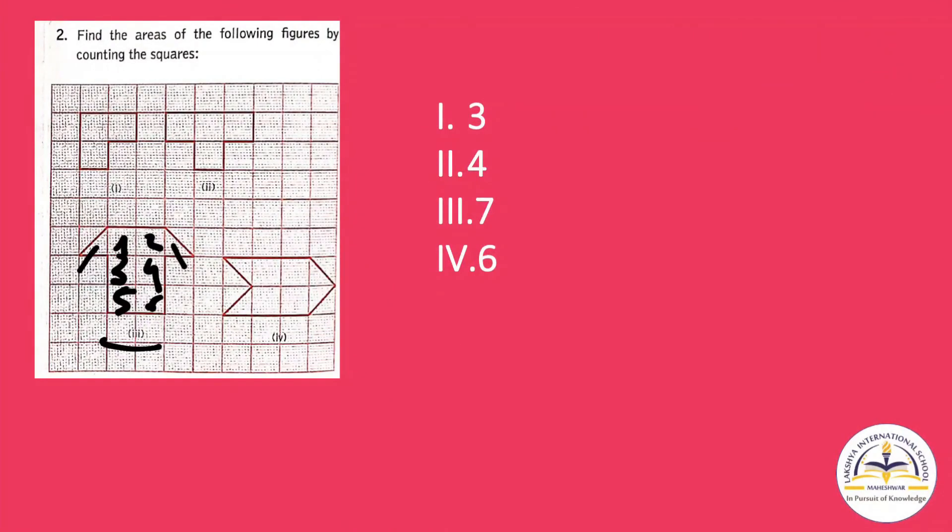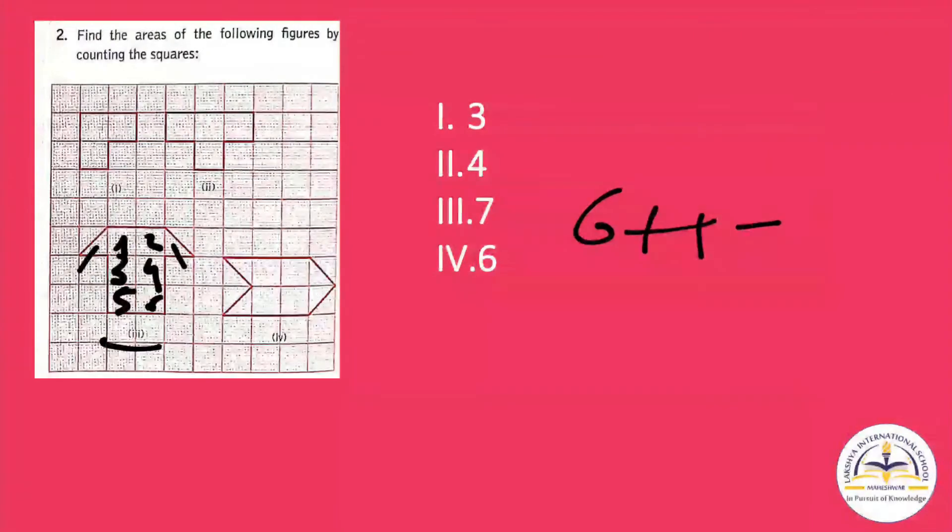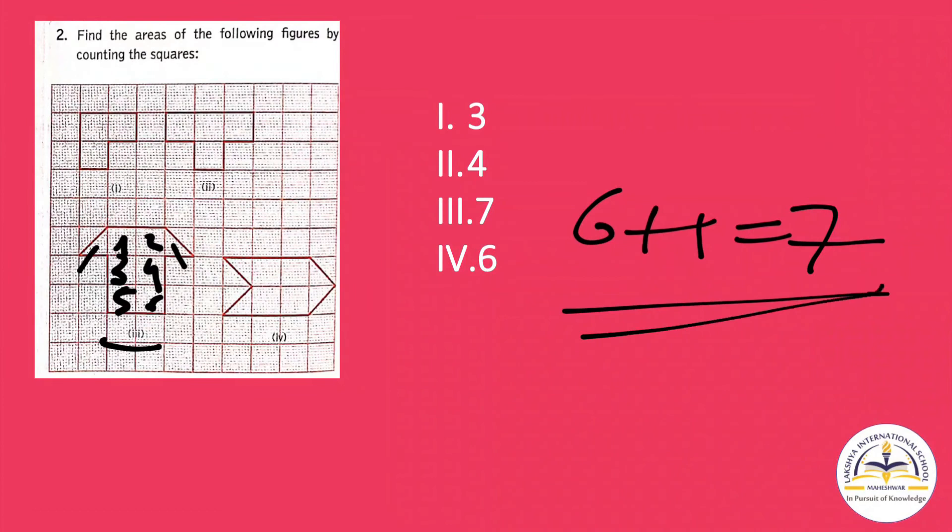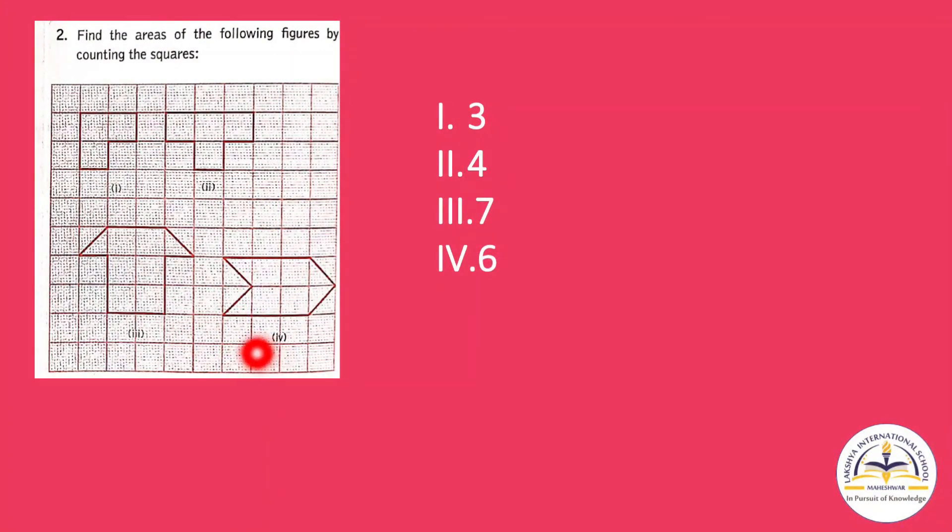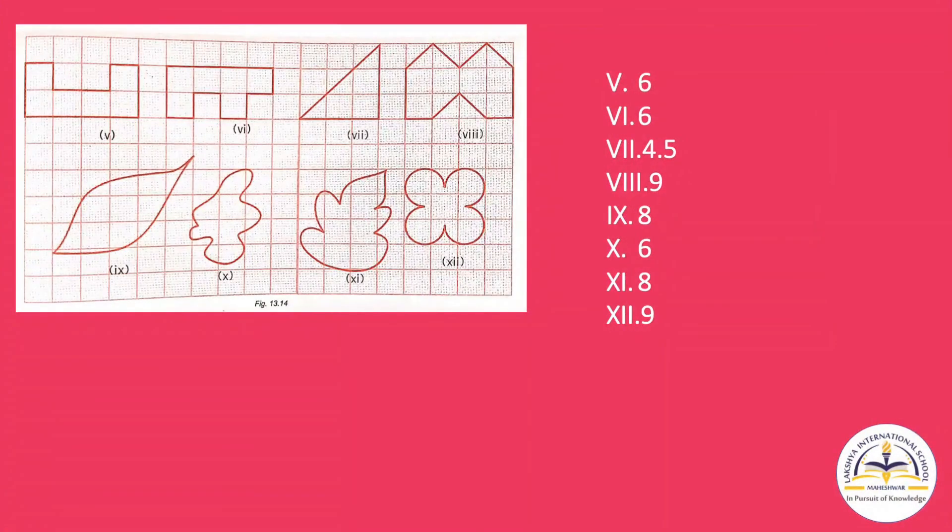Now this one half and this one half. Half plus half, it makes one square. That's why six plus one, that is seven. So seven is the area of this third figure. Now you have to find out for the fourth figure.